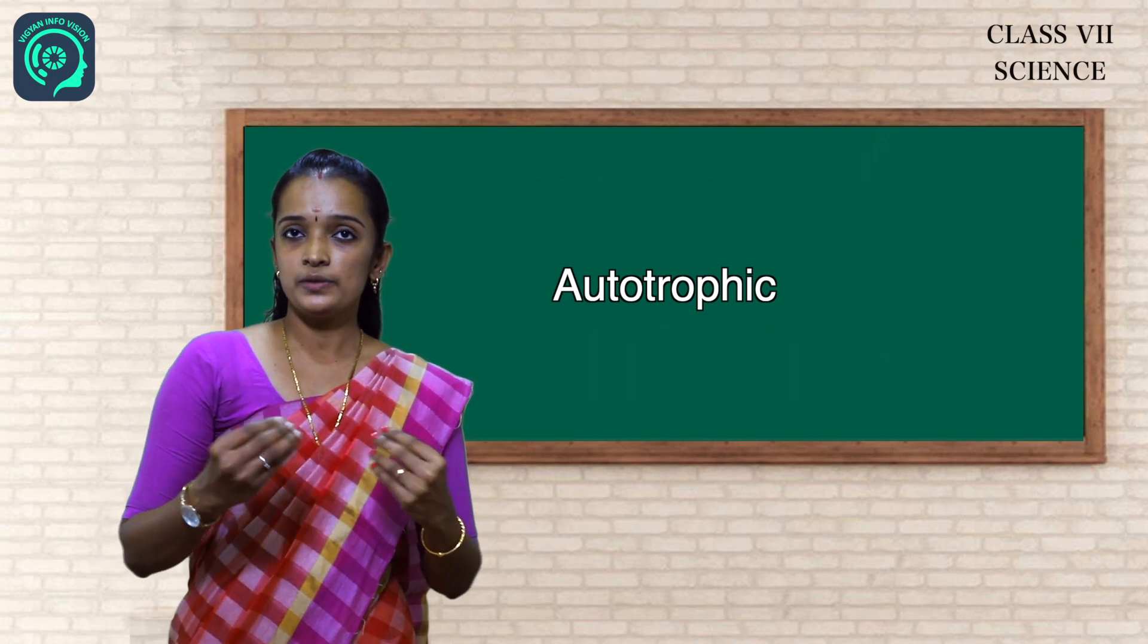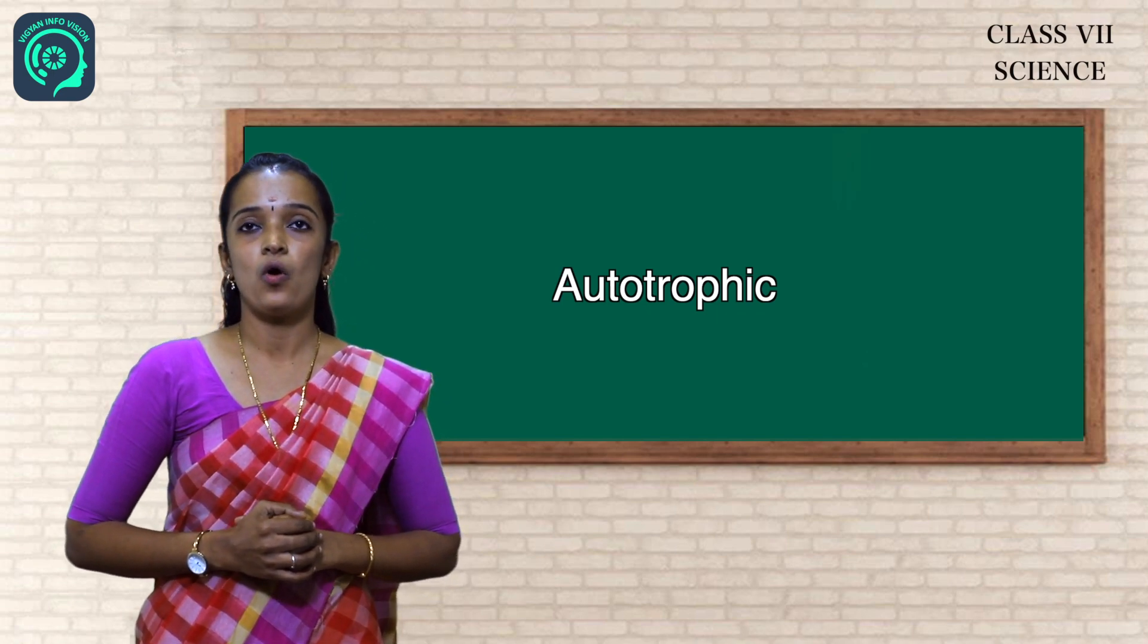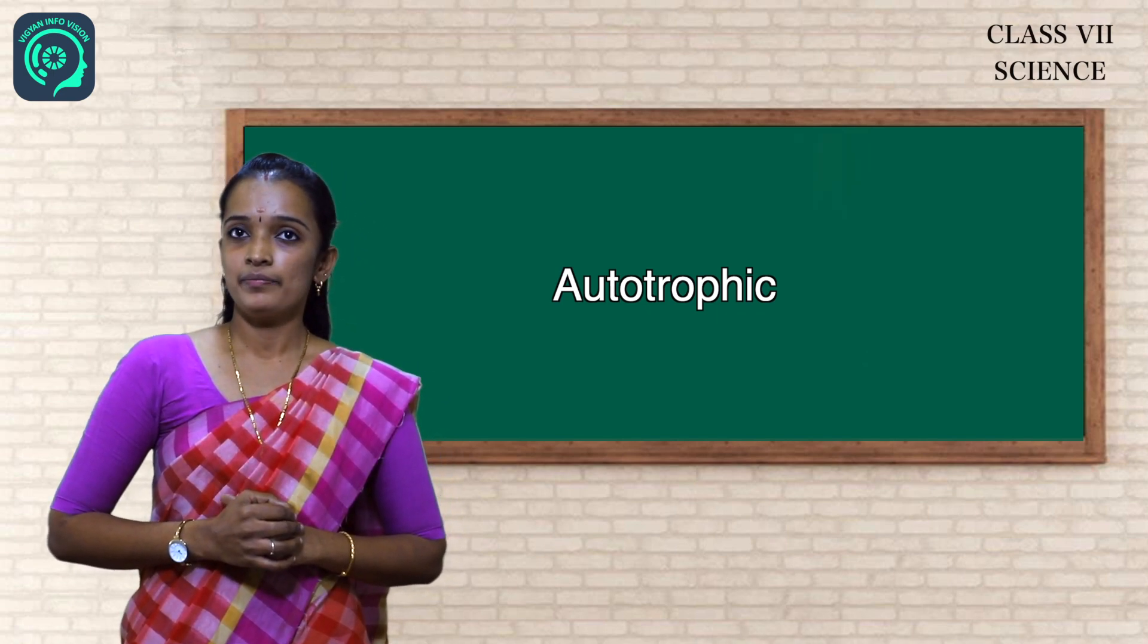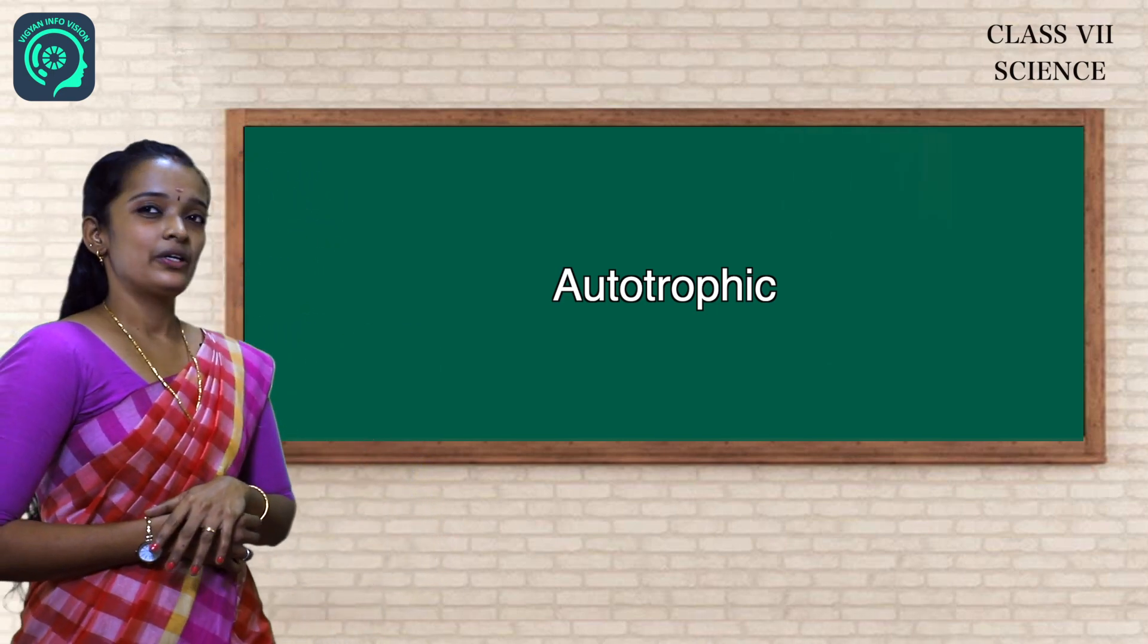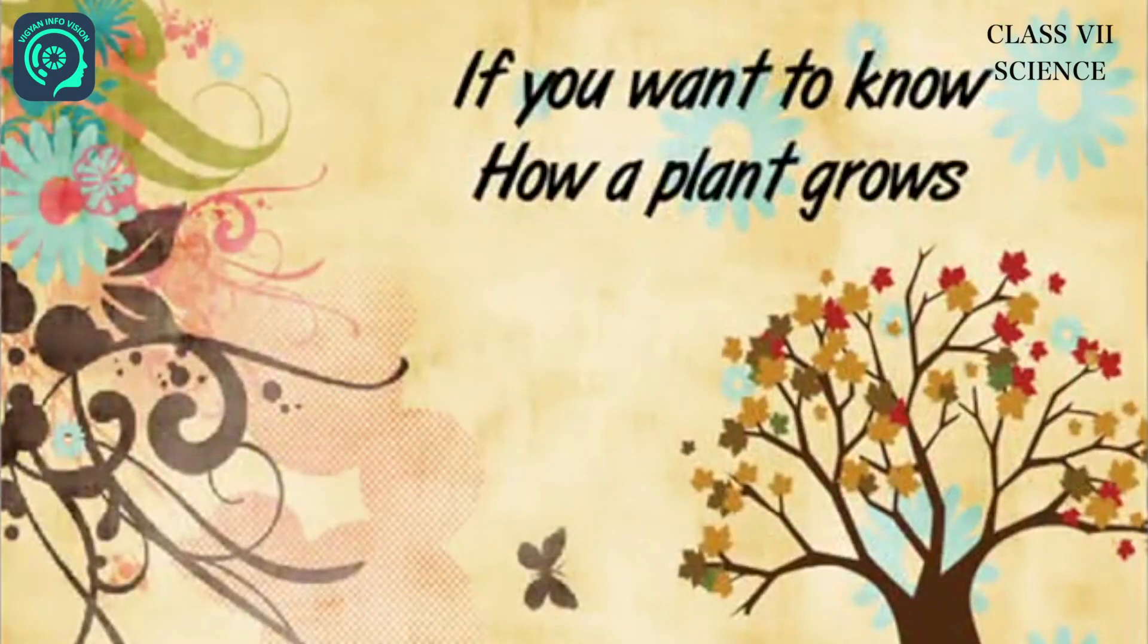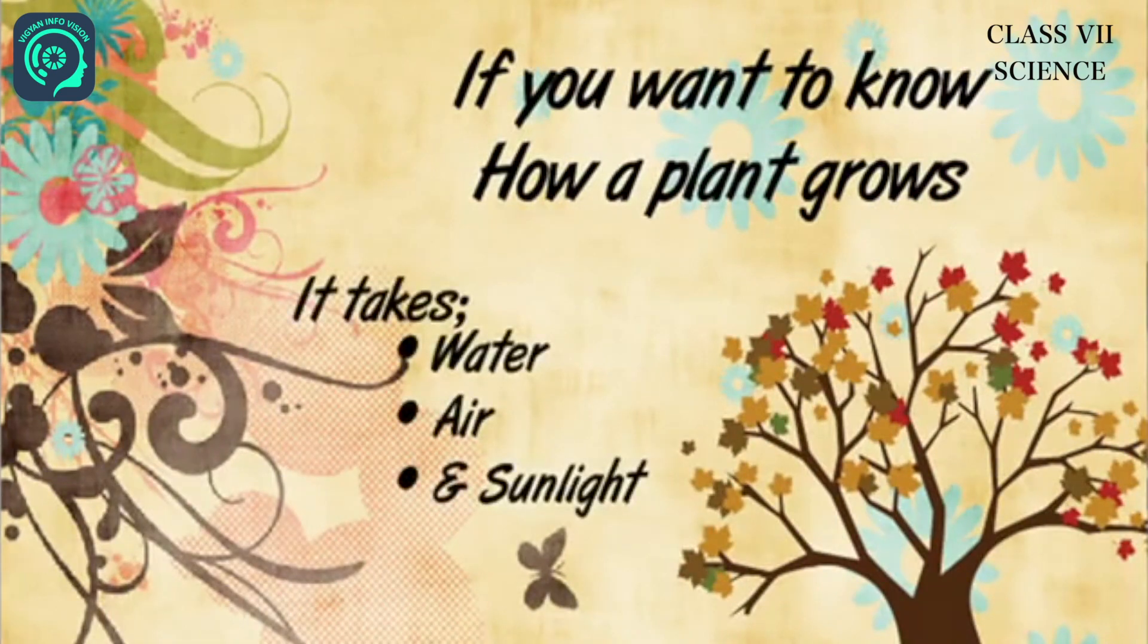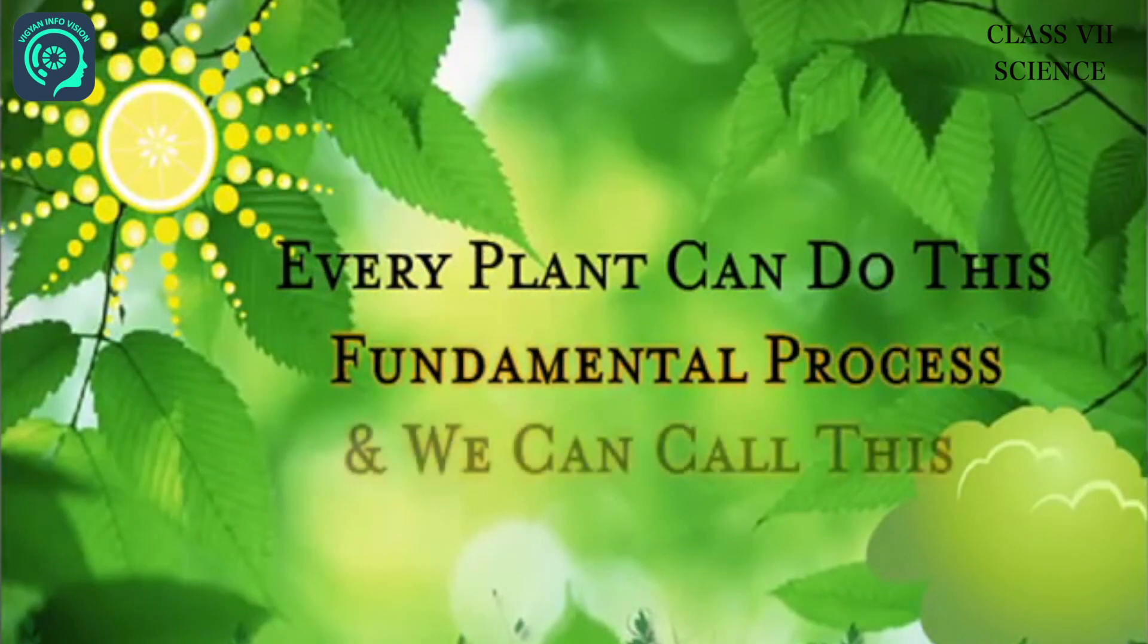Do you love music? Let's watch this musical video. You have to learn something from this video. If you want to know how a plant grows, it takes water, air and sunlight and makes cellulose. Every plant can do this fundamental process and we can call this photosynthesis.